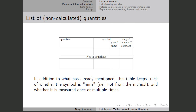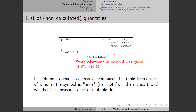For instance, if we had the quantity height, we would fill in the symbol. If there was a symbol in the lab manual, then we could put a G for given. If I had to make up one myself, I put an M for mine. If this is something that is measured once, we could put an S for single. If it's something that we measure multiple times, we put an R for repeated. Or if it's a constant that's given, we put a C.